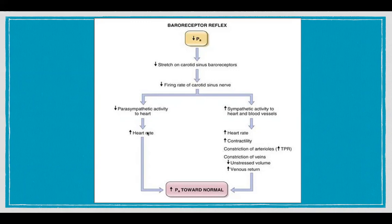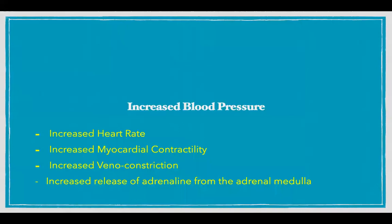Blood pressure is restored by increasing heart rate and increasing the force of contraction of the heart, which increases stroke volume. Together, increased heart rate and increased stroke volume produce an increase in cardiac output. As blood pressure is a product of cardiac output and total peripheral resistance, this raises pressure. In addition, there is vasoconstriction and venoconstriction which increases venous return to the heart, and there is increased release of adrenaline from the adrenal medulla.